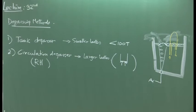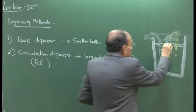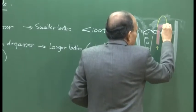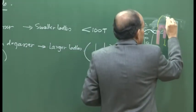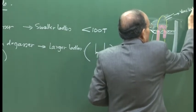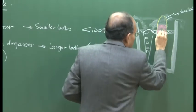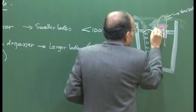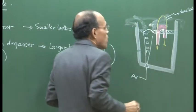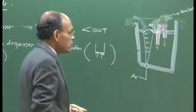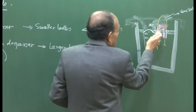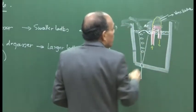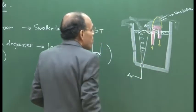Molten metal enters through one leg, flows up, and fills the container. A vacuum is applied above. In the up leg, a lift gas — also argon — is injected. As the argon bubble rises, it imparts buoyancy to the liquid, causing molten metal to flow upward through the up leg into the vacuum vessel, where it is exposed to vacuum.